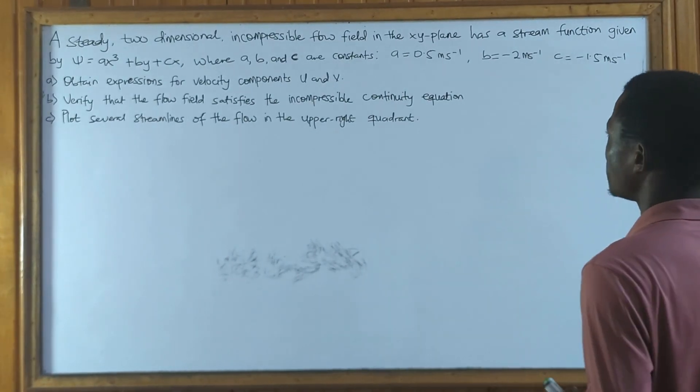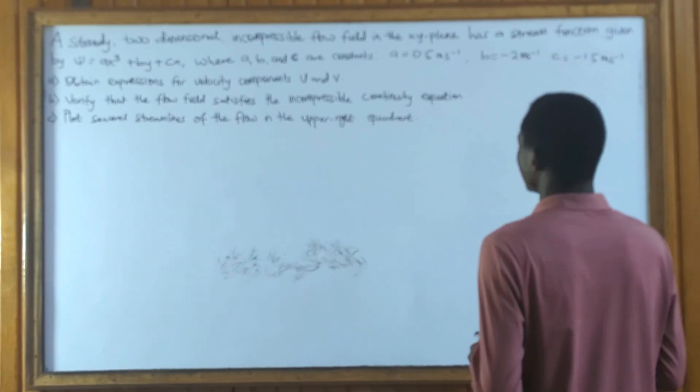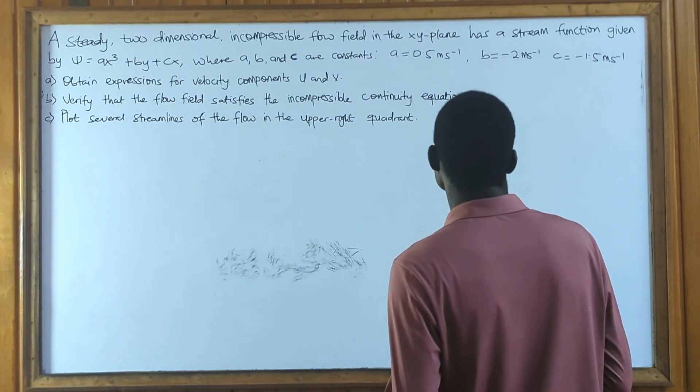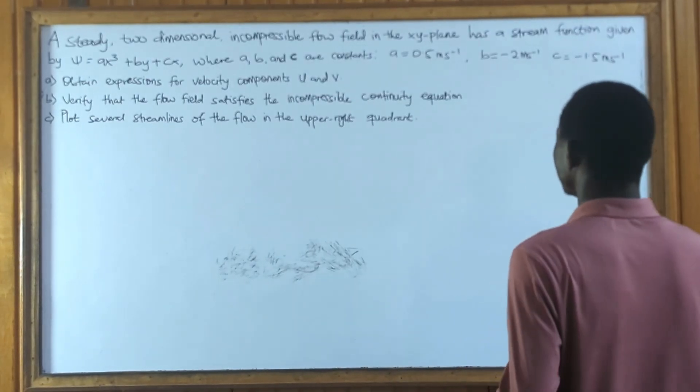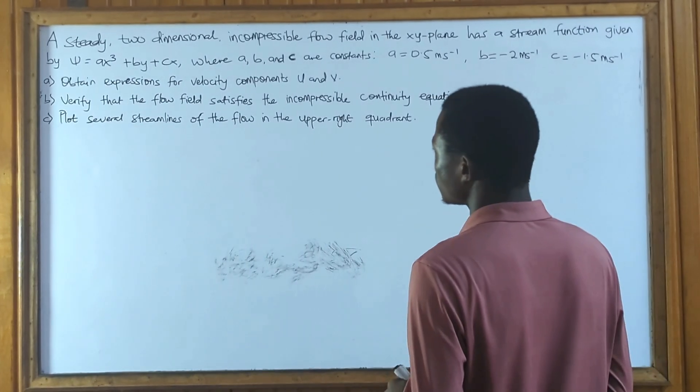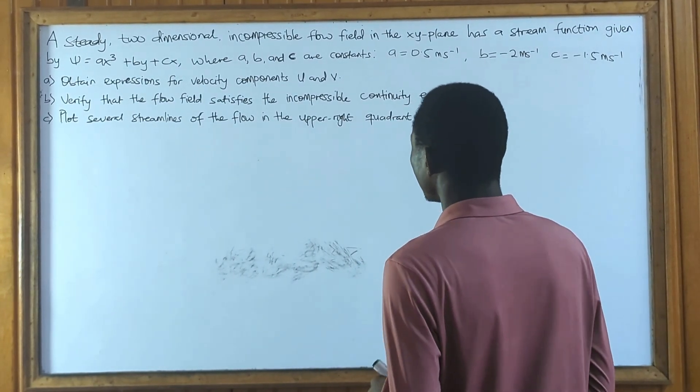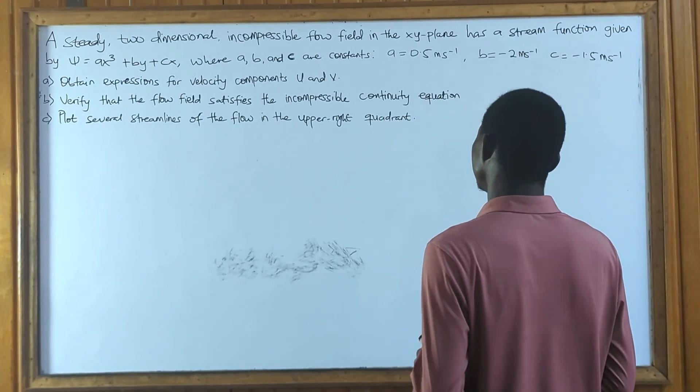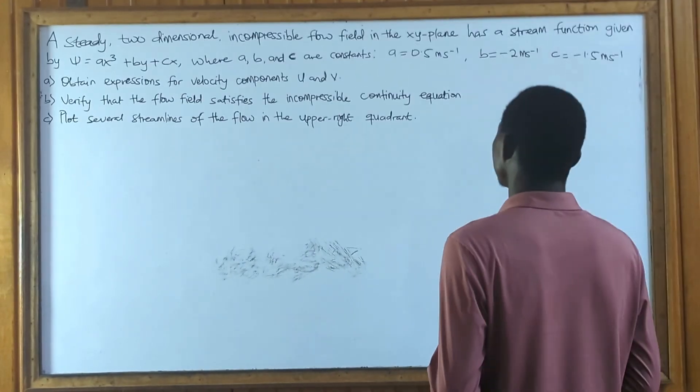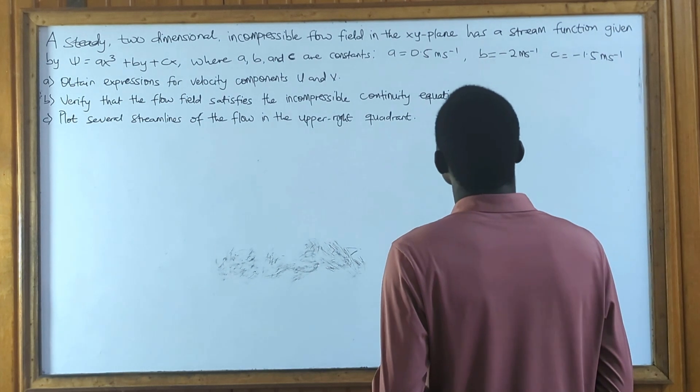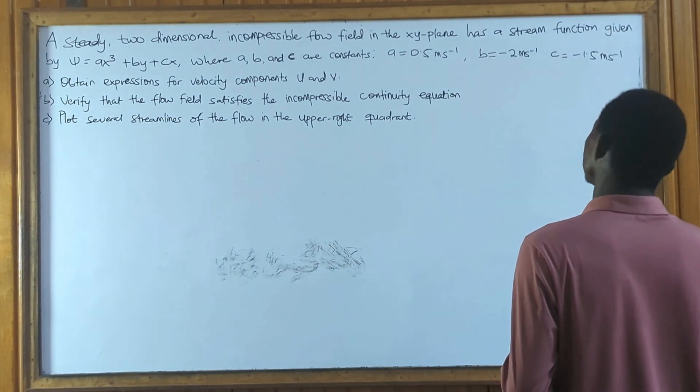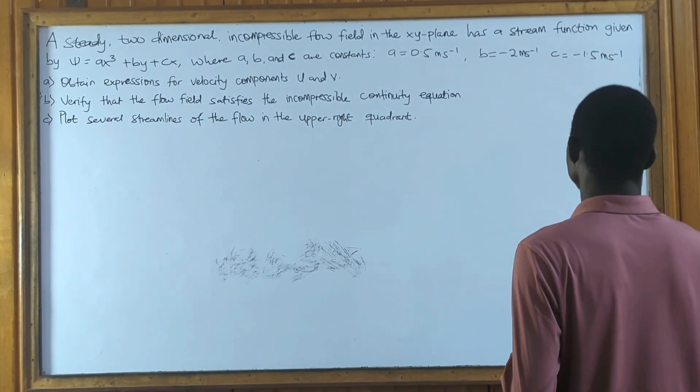A steady two-dimensional incompressible flow field in the xy-plane has a stream function given by ψ = ax³ + by + cx, where a, b, and c are constants, given where a = 0.5 m/s, b = -2 m/s...